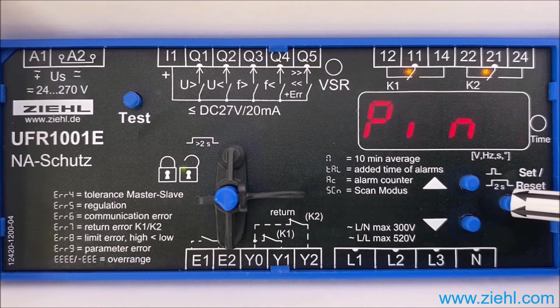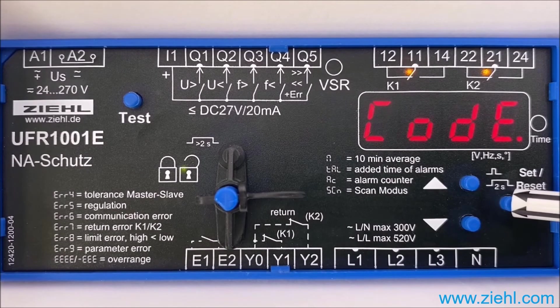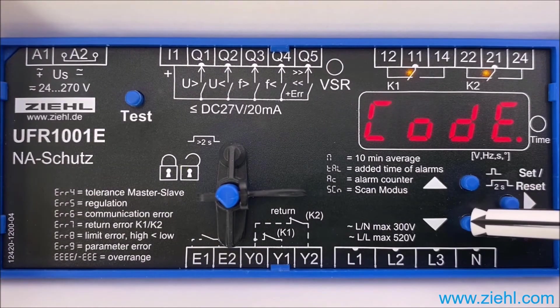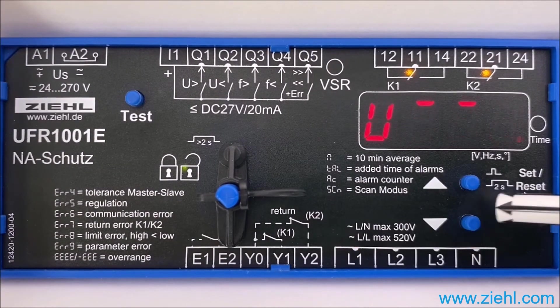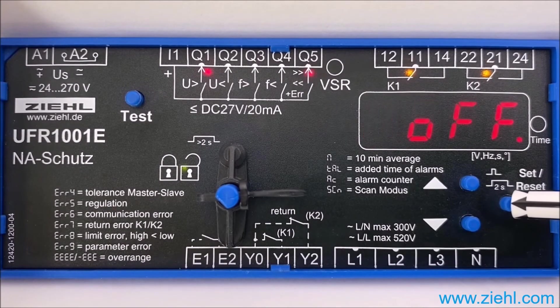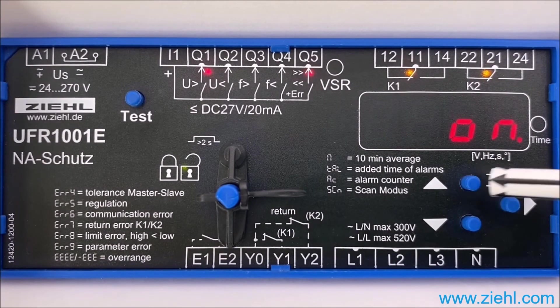To confirm, press set again. Three times downwards to second level overvoltage, push set once and we can see that this value can be changed now.